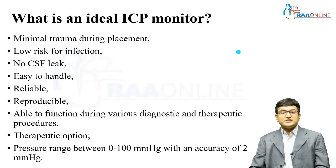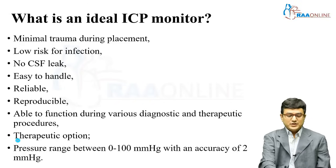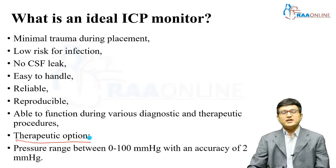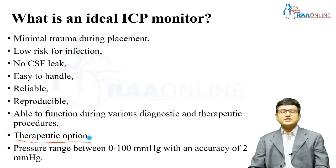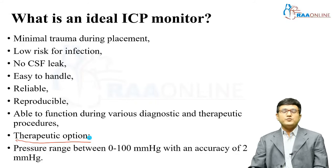An ideal ICP monitor is not only diagnostic but also provides a therapeutic option. An external ventricular drain, for example, allows CSF venting when pressures rise. The pressure range it measures should be 0 to 100 mmHg with an accuracy of 2 mmHg, especially in the 0 to 20 mmHg range of normal ICP values.